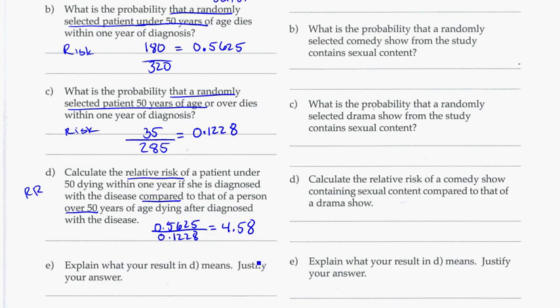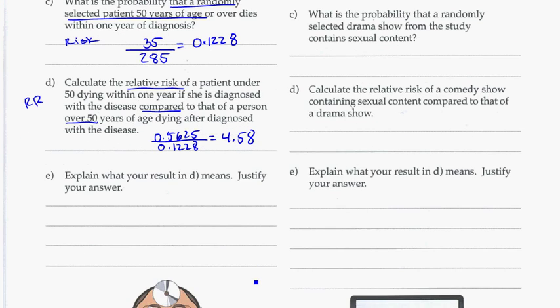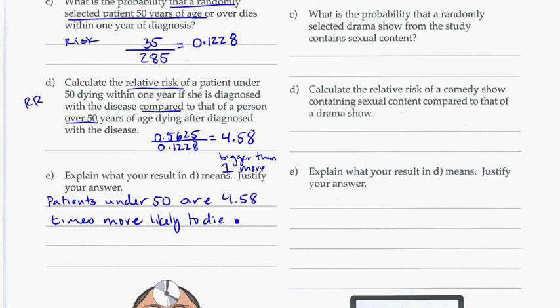So now we have to justify what this means or explain what it means. So what this means to us is that patients under 50, so you can kind of talk in the same order that they gave the question to you, so we're talking about the under 50s. So patients under 50 are 4.58 times more likely. I'm using more because it's bigger than one. So it's going to be more. So 4.58 times more likely to die from the disease within one year.